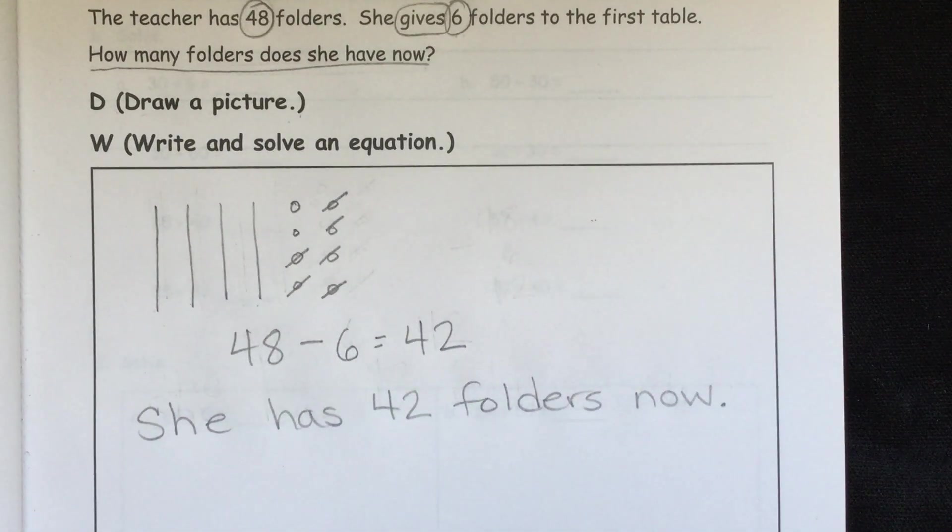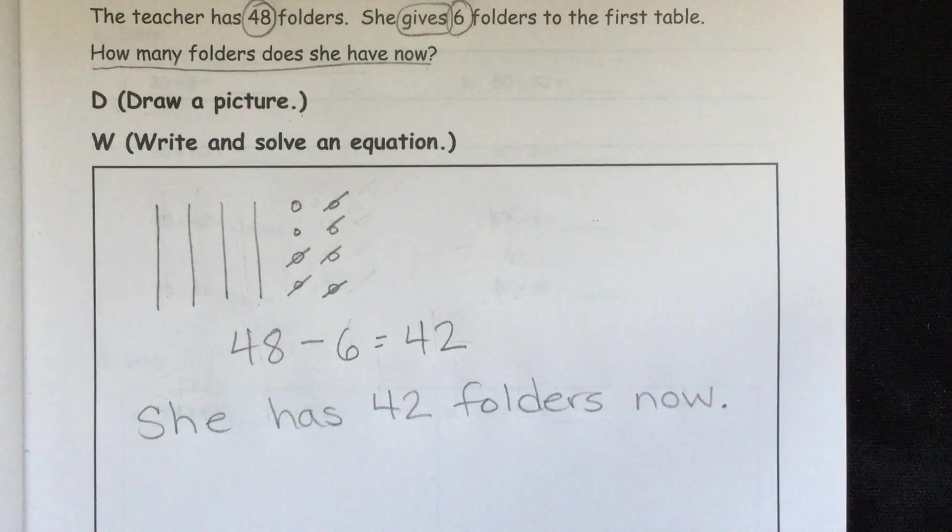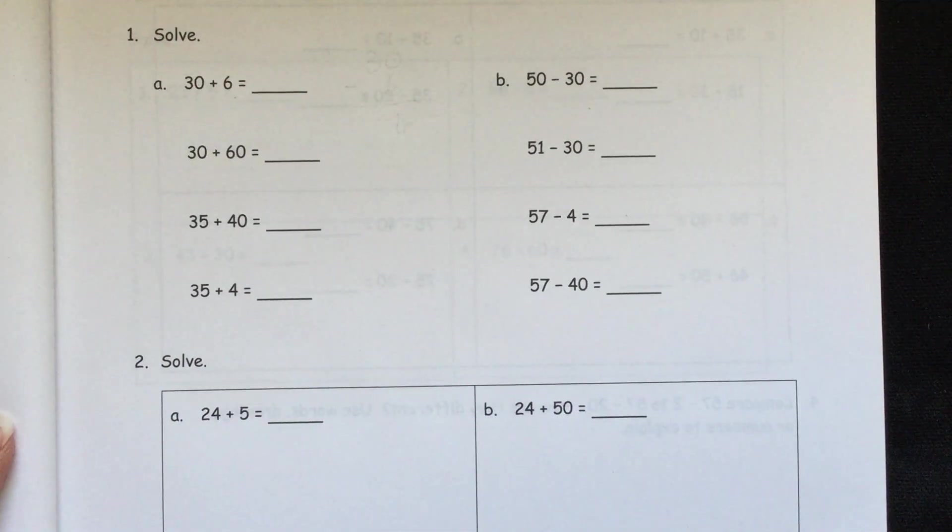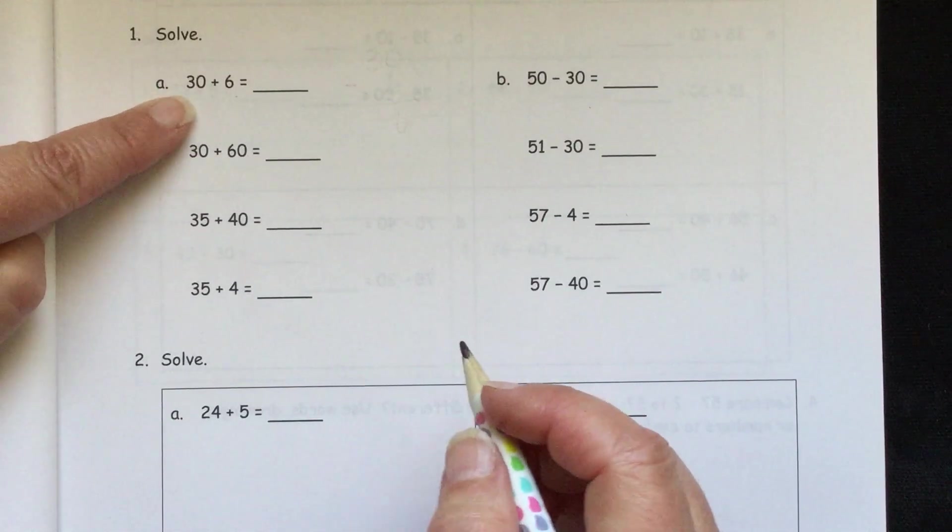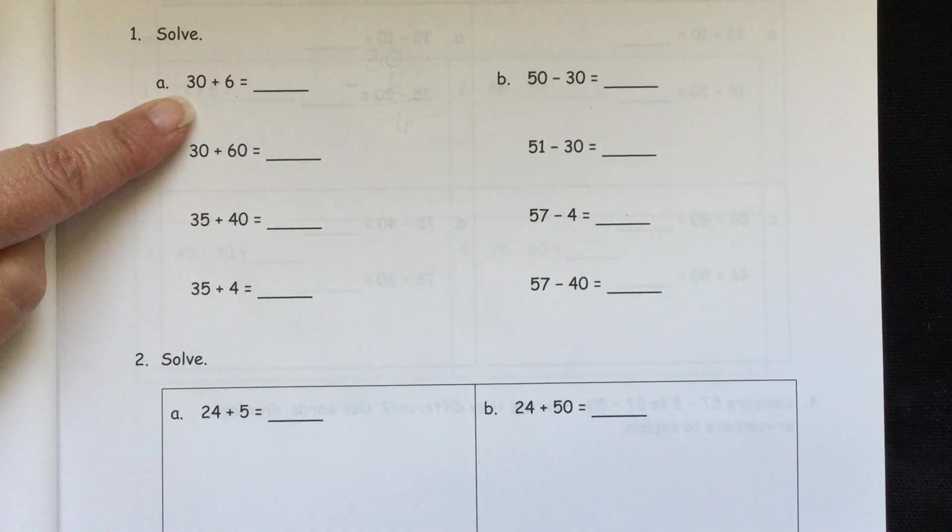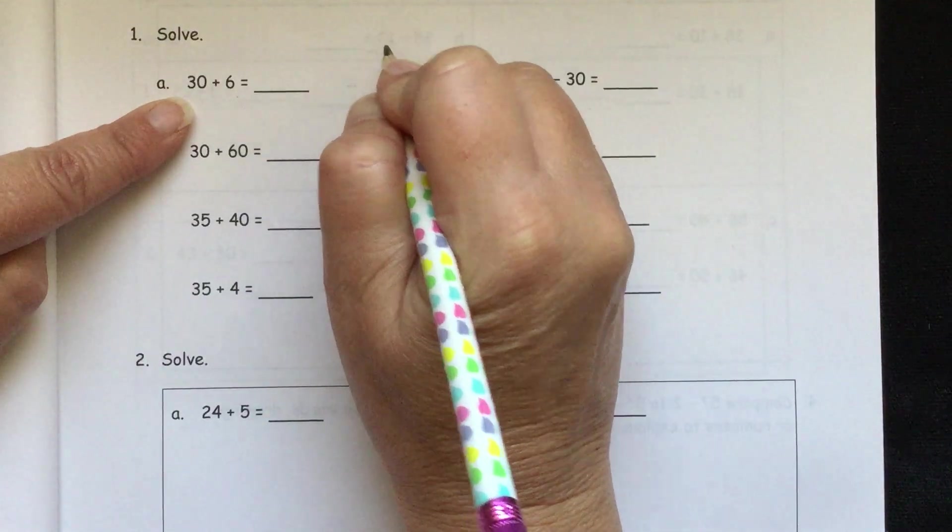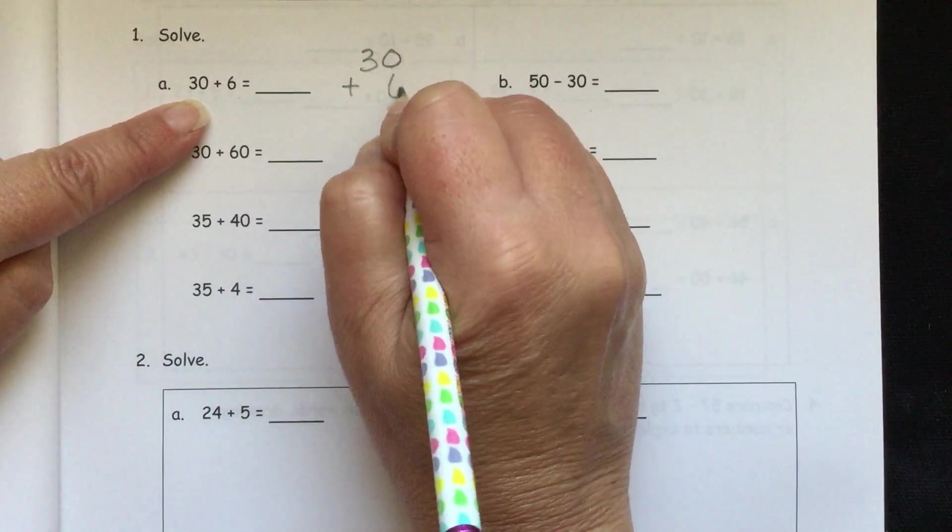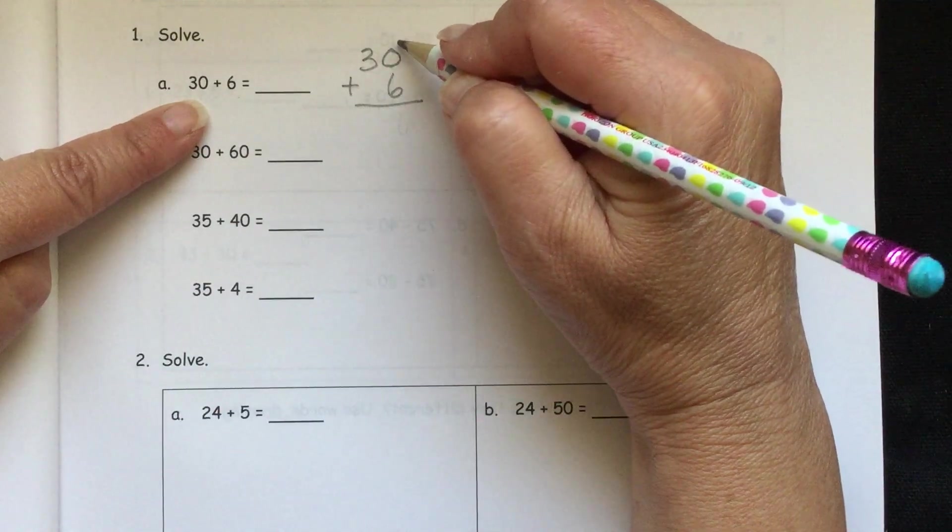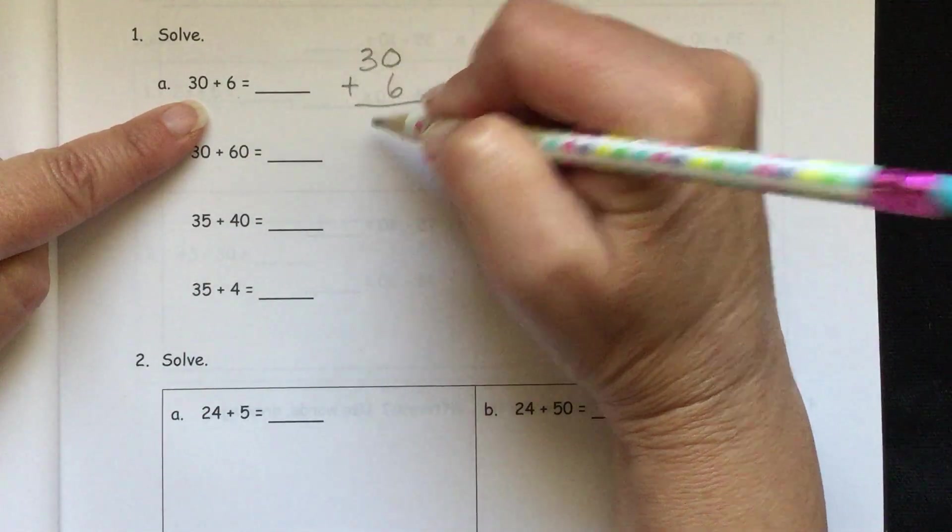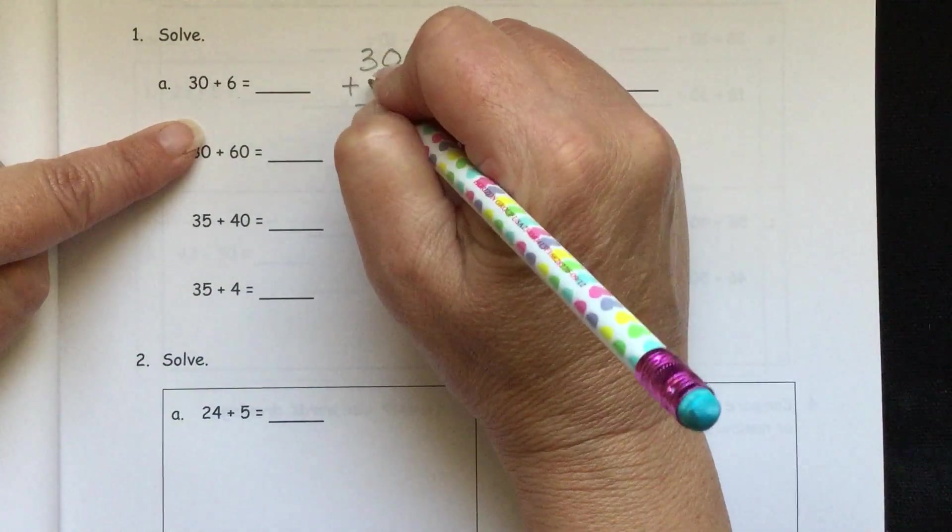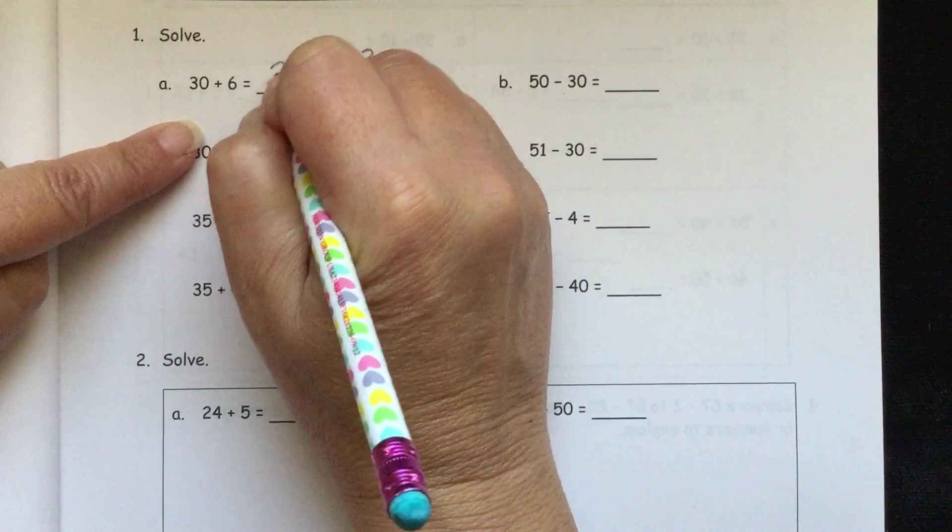And then we're going to move on to our problem set. For number 1, for A, 30 plus 6. Maybe you can do this in your head, which would be a great skill to have. But if you can't, we can always line it up vertically. We have 30 plus 6. Make sure you're careful. You write neatly that you have your ones together in the ones column and your tens in the tens column. So 0 plus 6 is 6. 3 plus nothing is still 3. So we'll put 36 here.